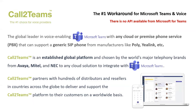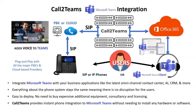There are companies like Call to Teams that have sprung up — they have the number one workaround for Microsoft Teams and voice. There's no API available for Microsoft Teams, so these guys have put together a workaround. It's used by literally all the major telephony brands. They're all using technically the same interface. You've got your PBX or cloud system using SIP, which talks through a hardware solution called direct routing through Teams to Microsoft 365, where Teams is. It's plug-and-play with all the major PBXs and SIP trunk providers.